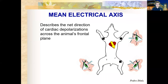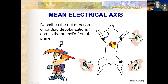Each time you have a different angle you're looking into the heart, that's a different lead of the ECG. Think of the mean electrical axis as a compass: it always points toward where the problem is. If you have a problem on the right side of the heart, the mean electrical axis will deviate to the right; if on the left side, it will deviate to the left.